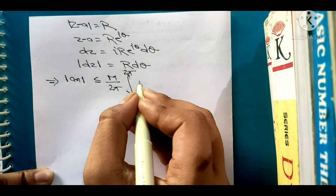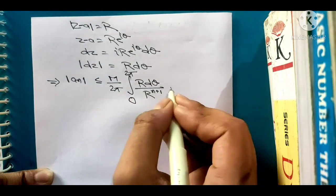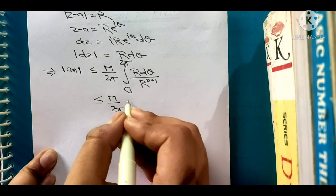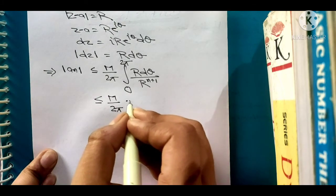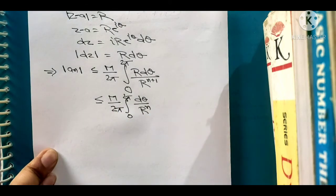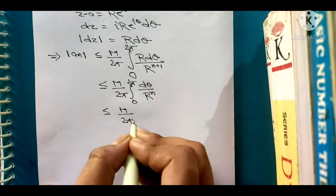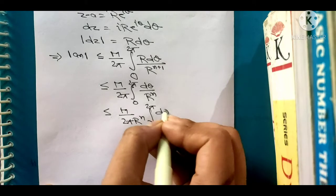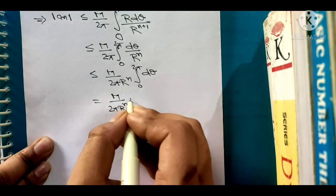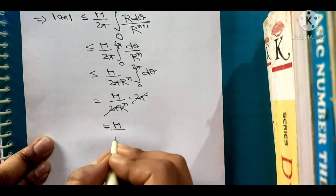Now we are going to put the value of modulus of dz which is R d theta and modulus of z minus a that is R to the power n plus 1. After integration, M upon 2 pi, this will become 0 to 2 pi d theta upon R^n. After that this will become 1 upon 2 pi R^n times the integral from 0 to 2 pi d theta, and this equals M upon 2 pi R^n times 2 pi. The 2 pi is cancelled. So this equals M upon R^n.